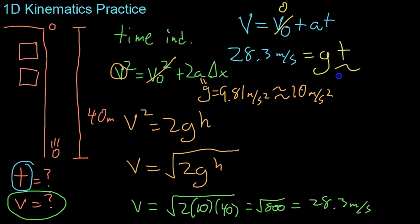So we just get that 28.3 equals, and remember our acceleration is just g, so g times t. And then because g we approximate as 10, all I have to do is move the decimal place over and you get the time it takes to fall is 2.83 seconds.